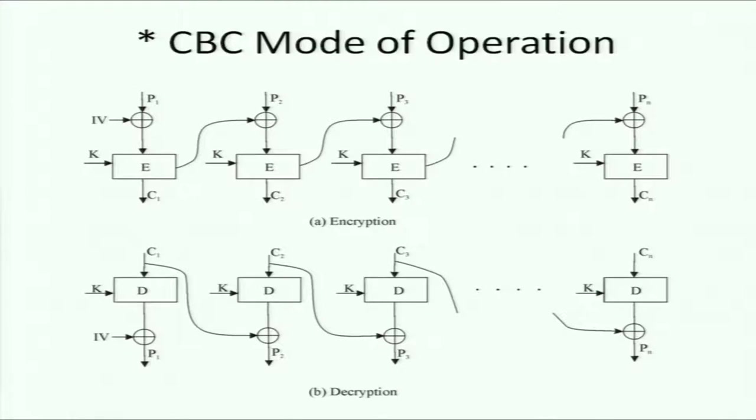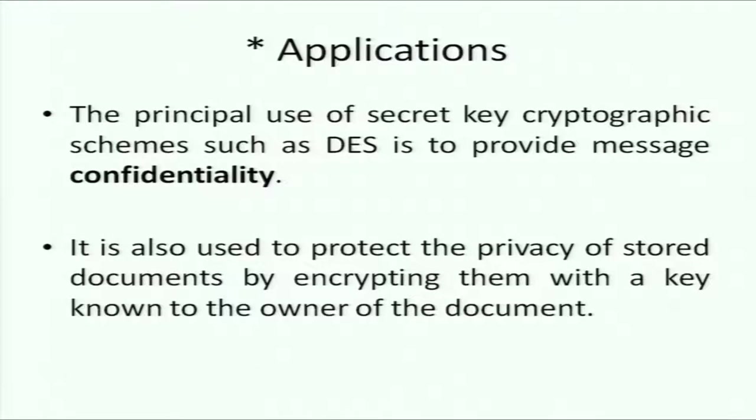For example, with counter mode you can decrypt blocks in parallel — if you have the fourth block but not the second and third, you can still decrypt it. With CBC, you can't decrypt block four until you've received blocks one through three. All secret key block ciphers — AES, DES, or others — are orthogonal and can be used in any of these modes.